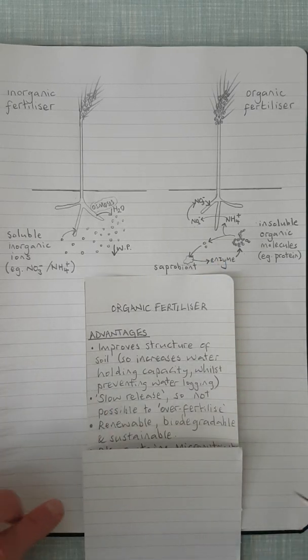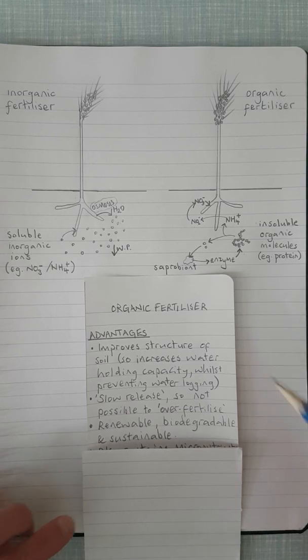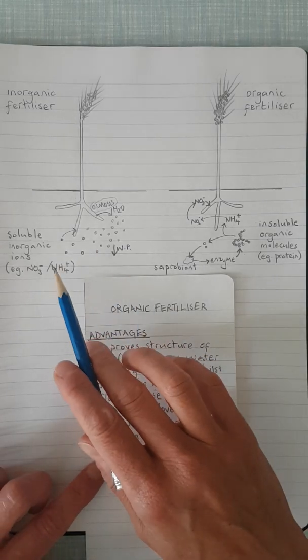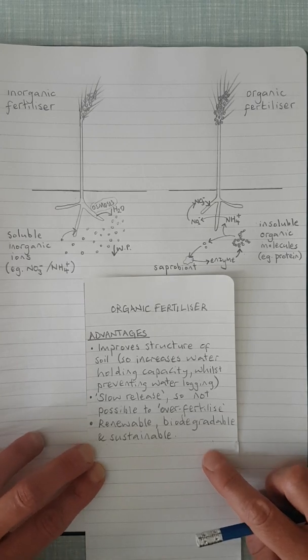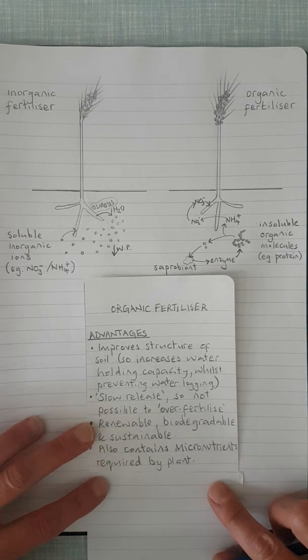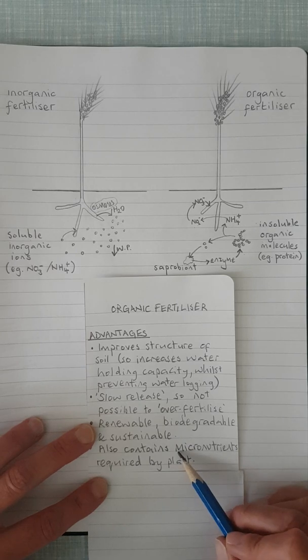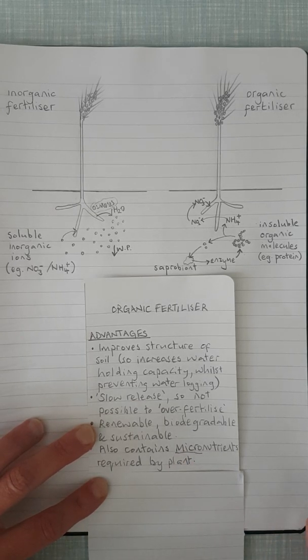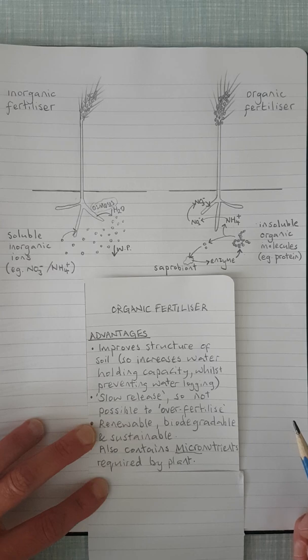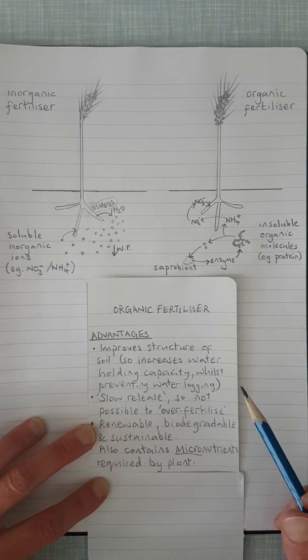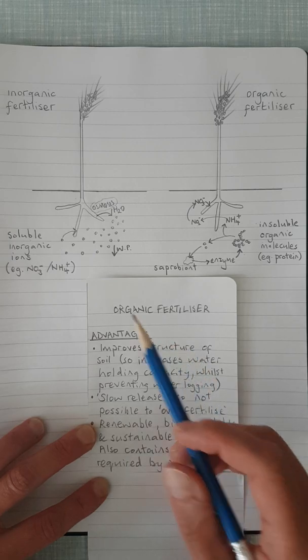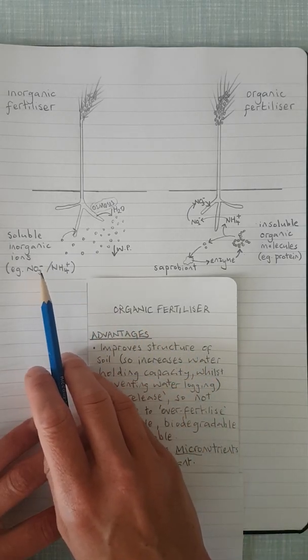It's renewable, biodegradable, sustainable, whereas the inorganic fertilizer used up quite a lot of energy to make those. And it also contains micronutrients. So some of the micronutrients that the plant might need are things like manganese, molybdenum, zinc, iron, all of those things that are not found in an inorganic fertilizer pack.